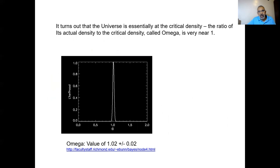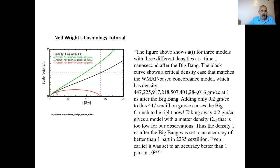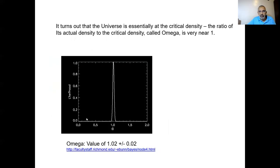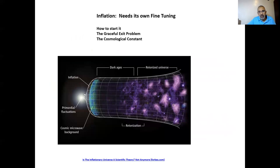The question becomes: how did this fine-tuning occur, if not by divine design? If we want to look at purely physical mechanisms, the theory of inflation has been posited as a way for space to be essentially flat, at that critical density where life is possible. Inflation posits that at the initial explosion, there was an unbelievably rapid expansion of space that then gave rise to a more gradual expansion of the universe.